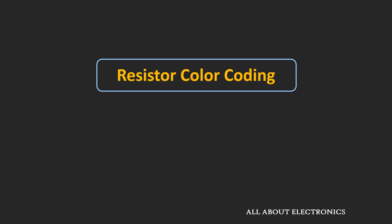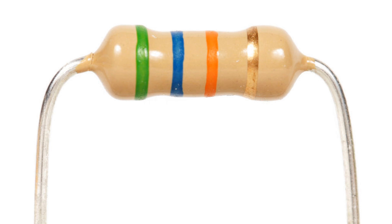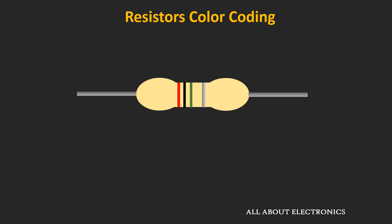Hey friends, welcome to the YouTube channel All About Electronics. In the previous video, we saw the different types of resistors. Now the value of a resistor is usually defined using color codes, and you might have observed the different color bands painted on the resistor. In this video, let us find out how to determine the value of a resistor from these color codes.